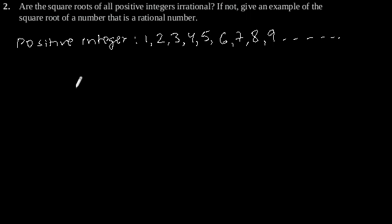So, square root of these positive integers, for example, square root of 1 is 1, which is a rational number. Square root of 2 is an irrational number.